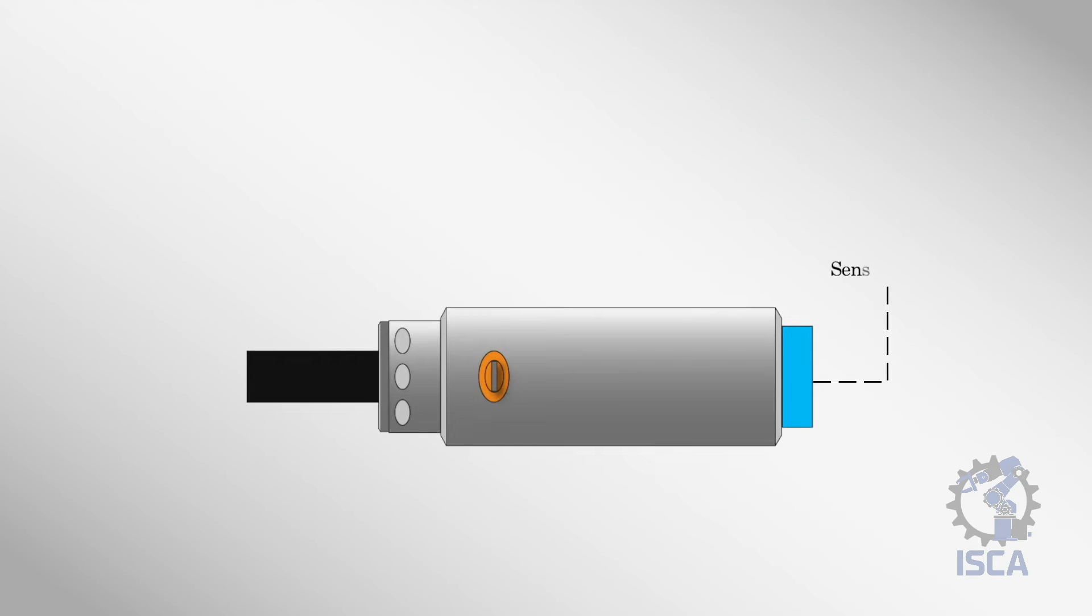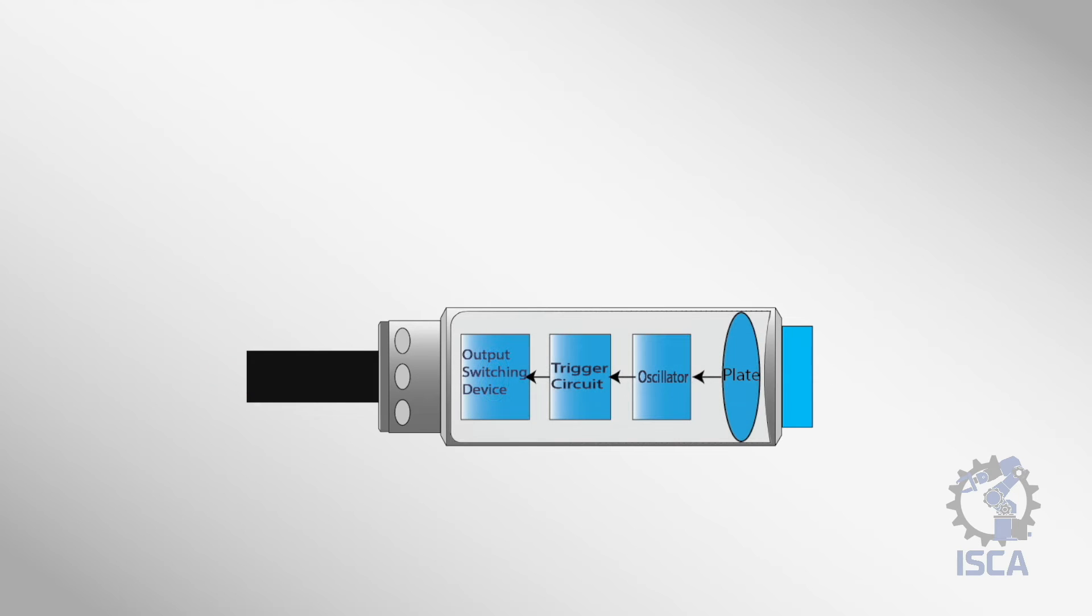The main components involved include the sensing face which emits the oscillating field, an indicator light to visually show detection, wiring for power and outputs, and adjustable controls for setting sensitivity. The sensing electronics are contained in the main housing and process the capacitance changes.